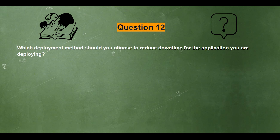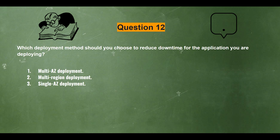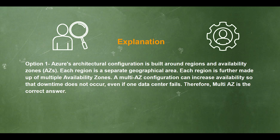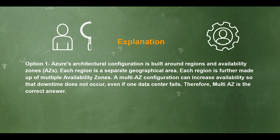Question 12. Which deployment method should you choose to reduce downtime for the application you are deploying? Options: 1) Multi-AZ deployment, 2) Multi-region deployment, 3) Single AZ deployment, 4) Multi-subnet deployment. The correct answer is option 1. Azure's architecture is built around regions and availability zones. A multi-AZ configuration can increase availability so that downtime does not occur even if one data center fails. Therefore, multi-AZ is the correct answer.